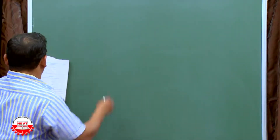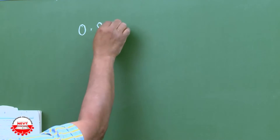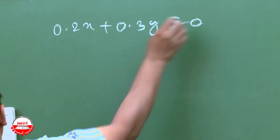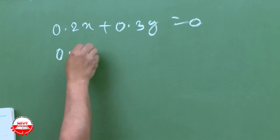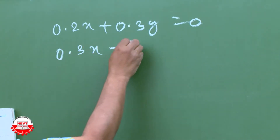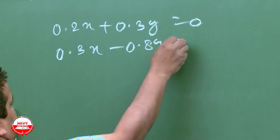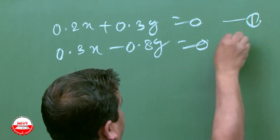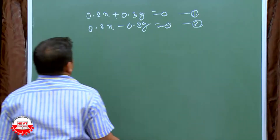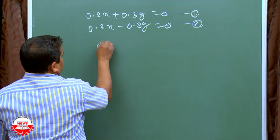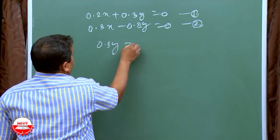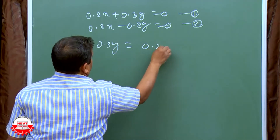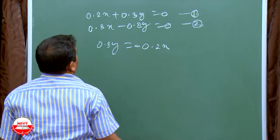For the fifth part: 0.2X plus 0.3Y is equal to 0 (equation 1), and 0.3X minus 0.8Y is equal to 0 (equation 2). Using the substitution method: rearrange equation 1 to get 0.3Y is equal to minus 0.2X, so Y is equal to minus 0.2X by 0.3.